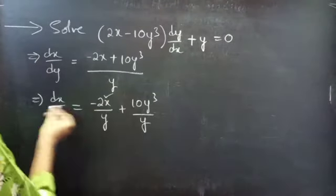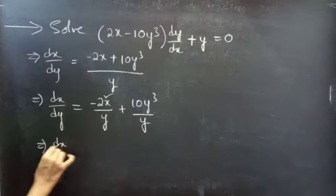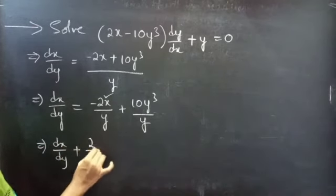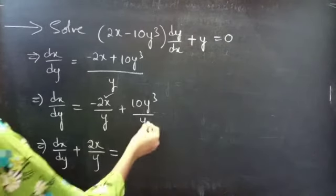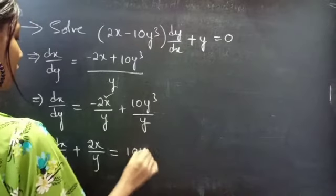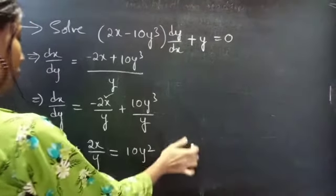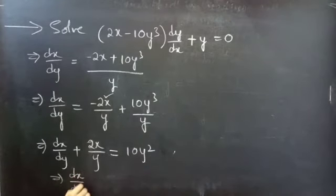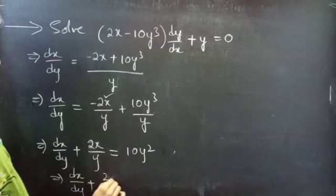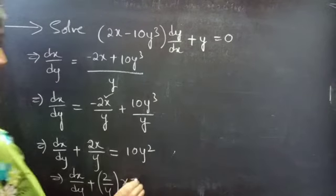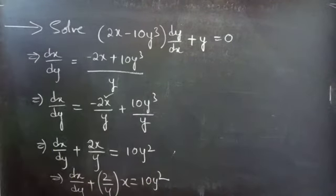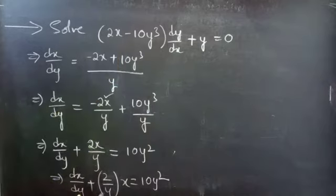Bring the term involving x to the LHS. We get dx/dy plus 2/y times x. Then 10y³/y — the y cancels — giving 10y². So we can write this as dx/dy plus (2/y)·x equals 10y², separating the function of y and x. Function of y times function of x equals 10y².